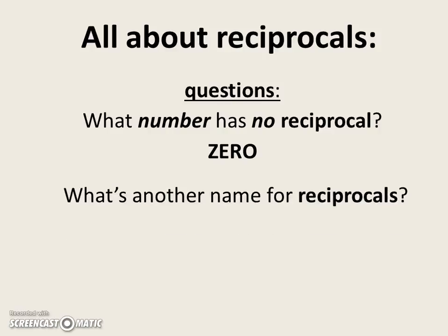What's another name for reciprocals? Multiplicative inverses. In a previous video, we talked about additive inverses. That's when you take a number and its opposite. If you add them together, you always get zero, right? Well, here, when we take a number and its flip and we multiply them together, the answer is always one. So these are multiplicative inverses.